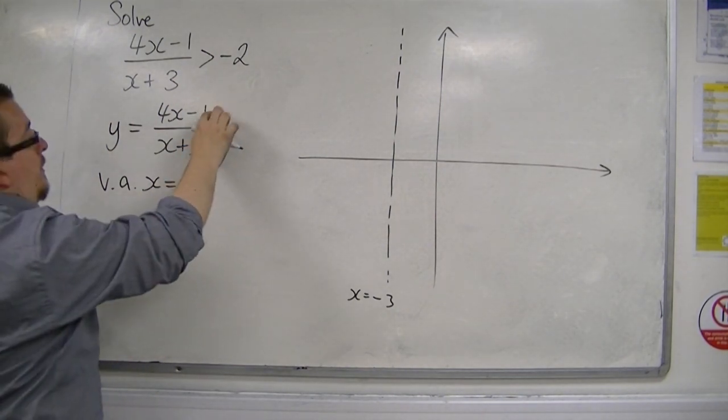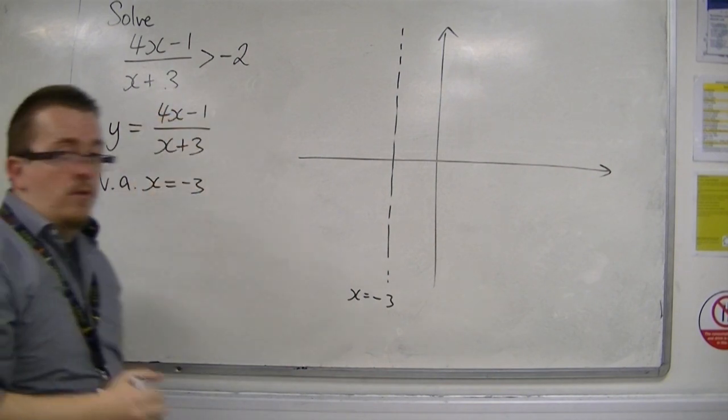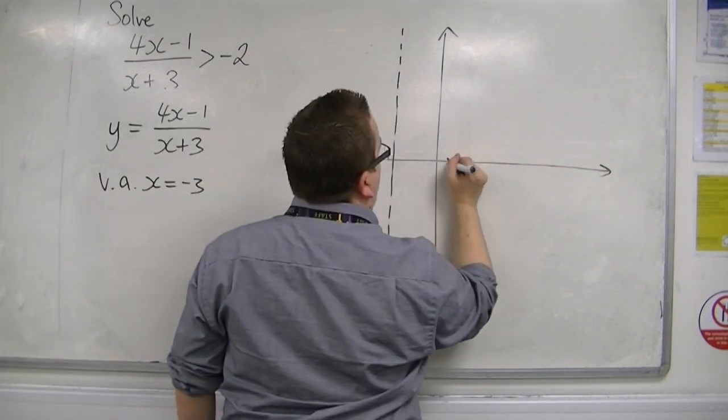It's going to cross the x-axis when x is 1 quarter, that's when the numerator is 0, so we're crossing at 1 quarter.